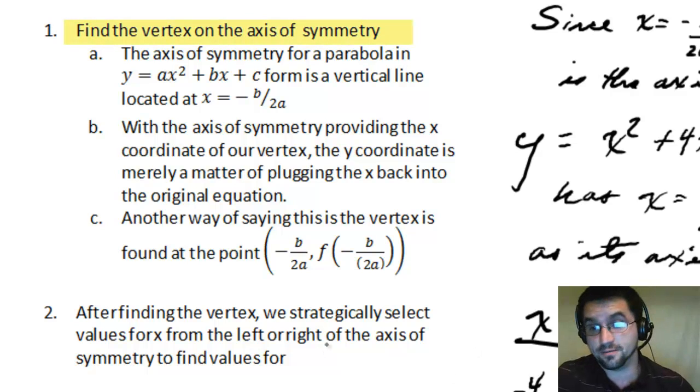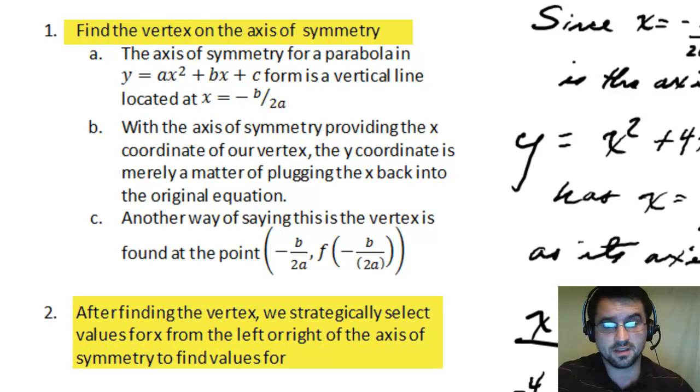So again, what is it? You find the vertex, get some points to the left, get some points to the right, and you graph those. It's pretty simple.